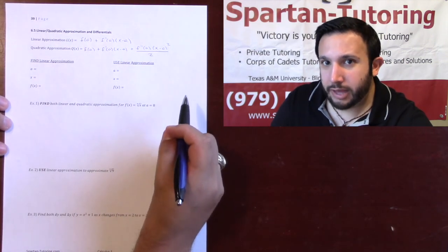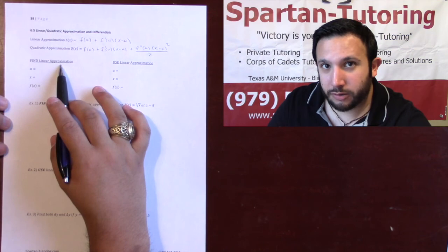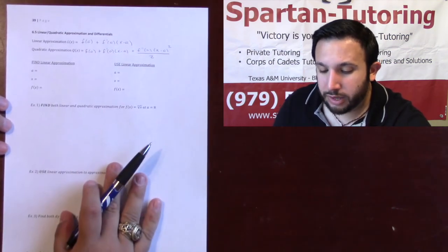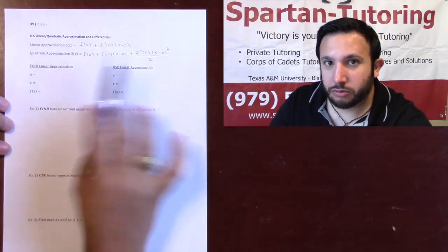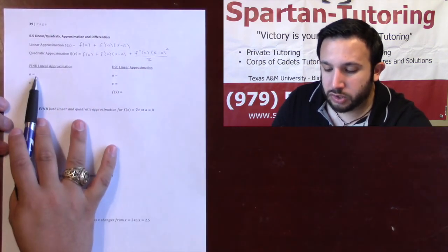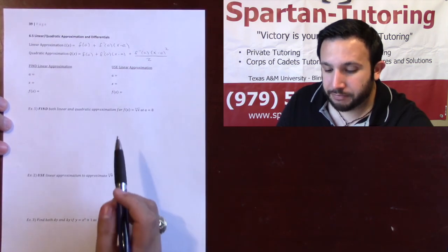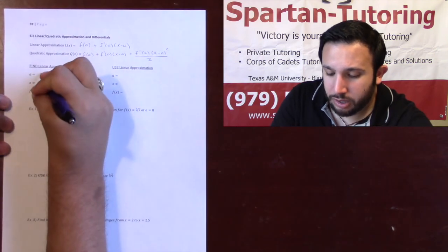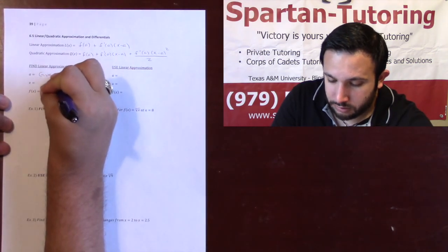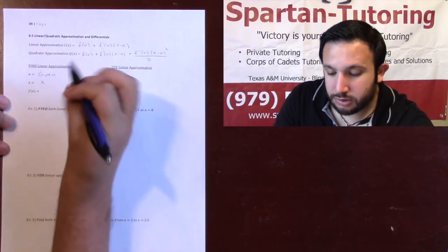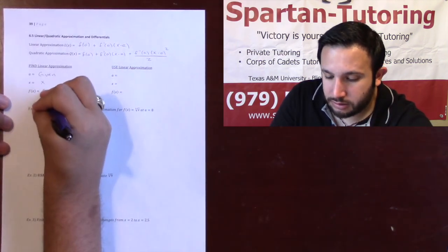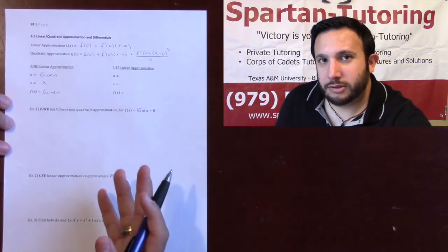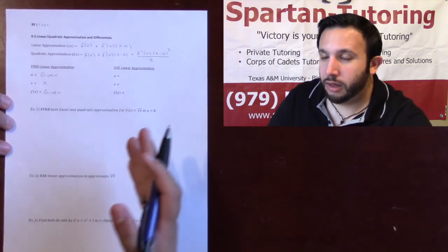They're either going to ask you to find the linear or quadratic approximation, or use linear or quadratic approximation. Regardless of how it's asked, your formulas don't change. The only thing that changes is what you plug in for a, x, and f(x). If they say find linear approximation, your a will be given, your x you leave as x, and your f(x) will also be given — because your final answer is going to be a function of x.